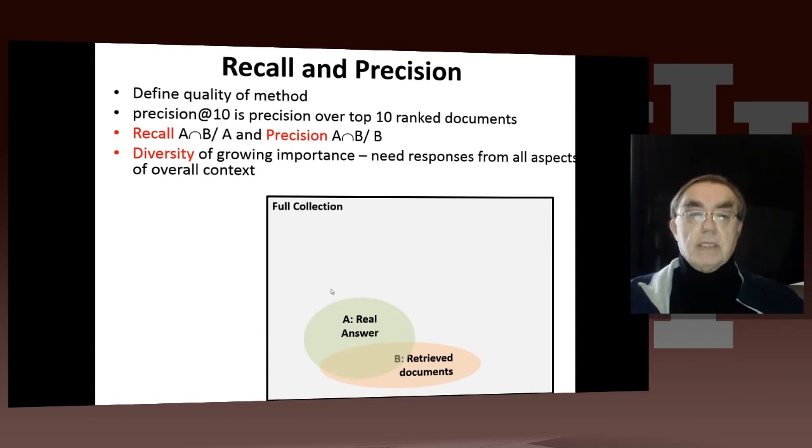So you can obviously trade these off against each other. If you have a very strict search, then you may not recall so many. But it may also be more precise, because you would only get very, but if you have an answer, which is a small circle inside the real answer, then the precision is 100%, but the recall is smaller than that.